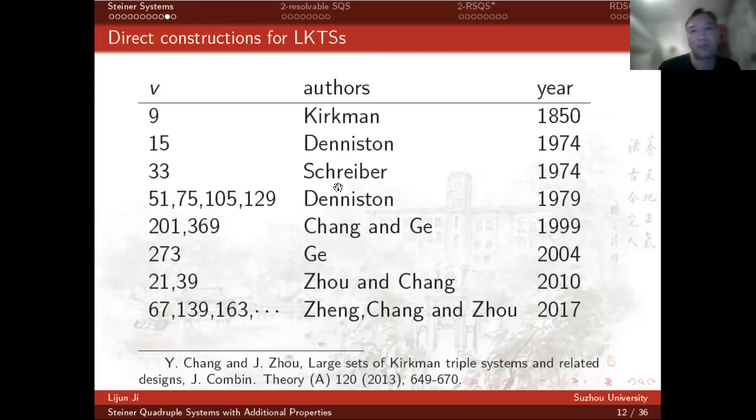By zero-sum method and automorphism group, a few LKTS of small orders were given in this table. These small orders are listed in this survey paper.